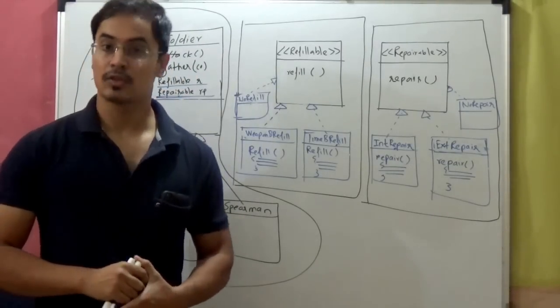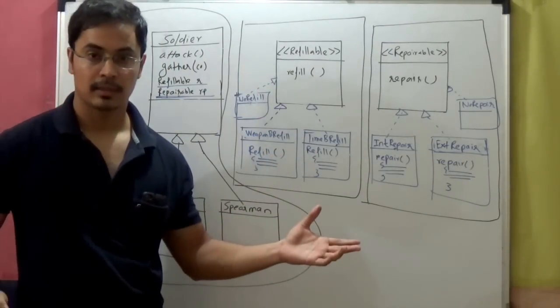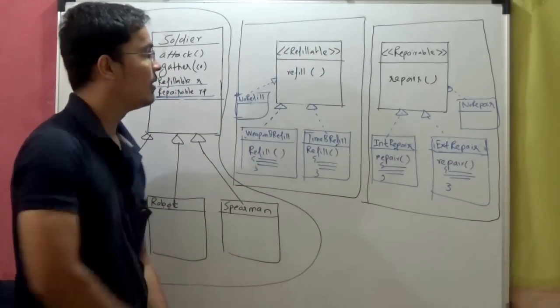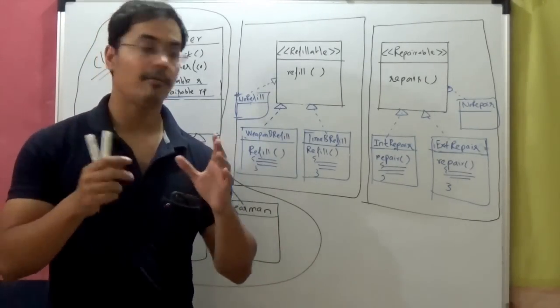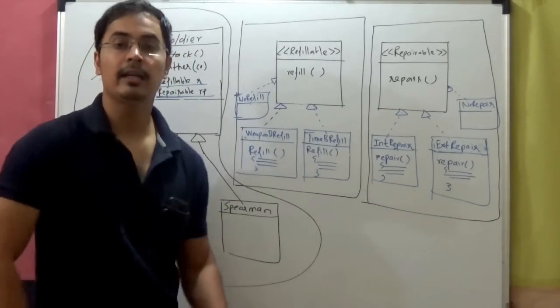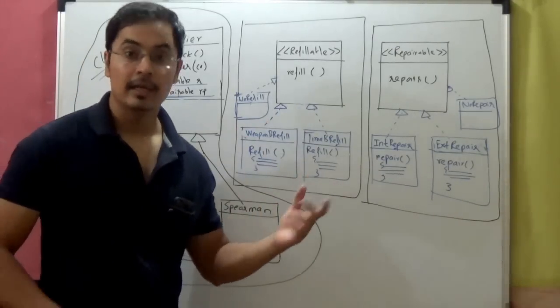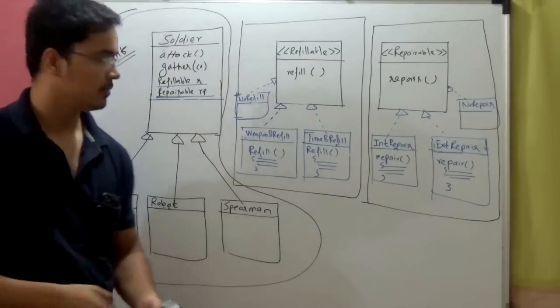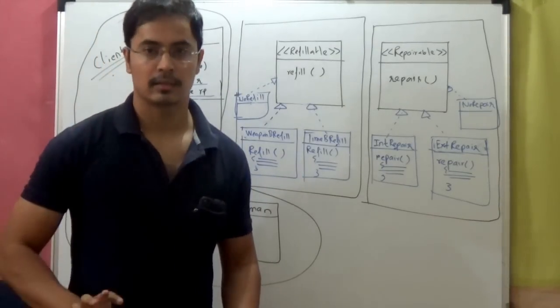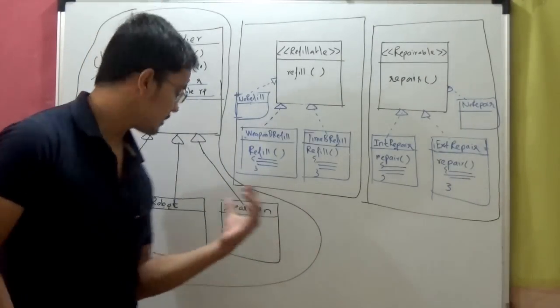This design pattern is called as strategy design pattern. So in strategy design pattern, we define a family of algorithms and encapsulate them so that they are interchangeable. So anyone can substitute for refillable interface. The benefit of strategy pattern is the algorithms, the behaviors can vary independently of the clients who are consuming them. You can change them. If you change some code in time-based refill, you increase the interval for refill from 10 seconds to 20 seconds, you don't have to do any change in your clients. You can just do that change and automatically that change will be reflected in the behavior of these soldiers.